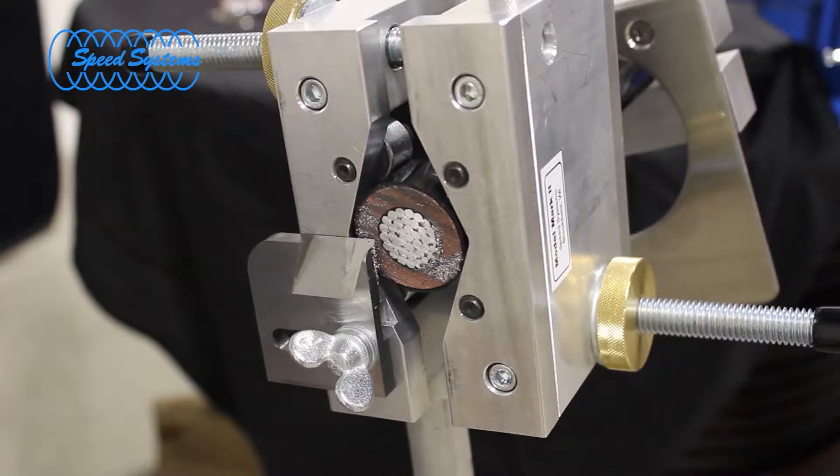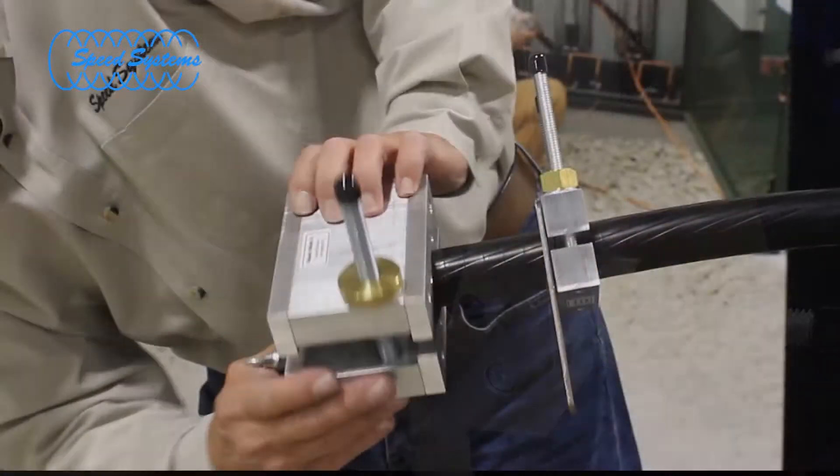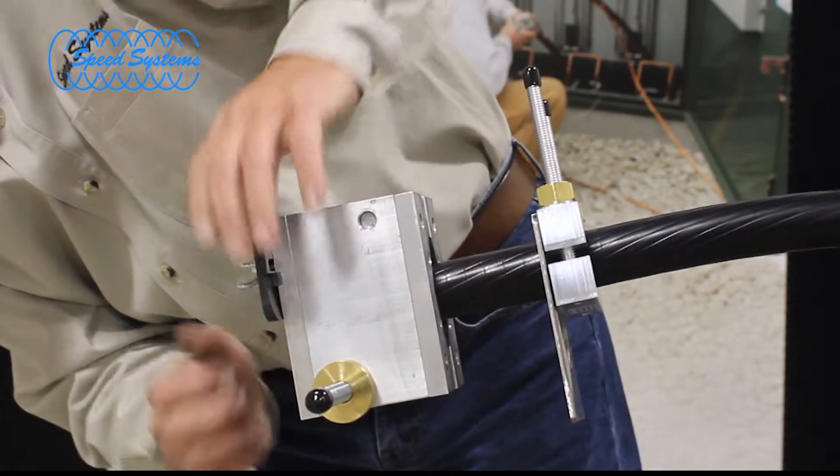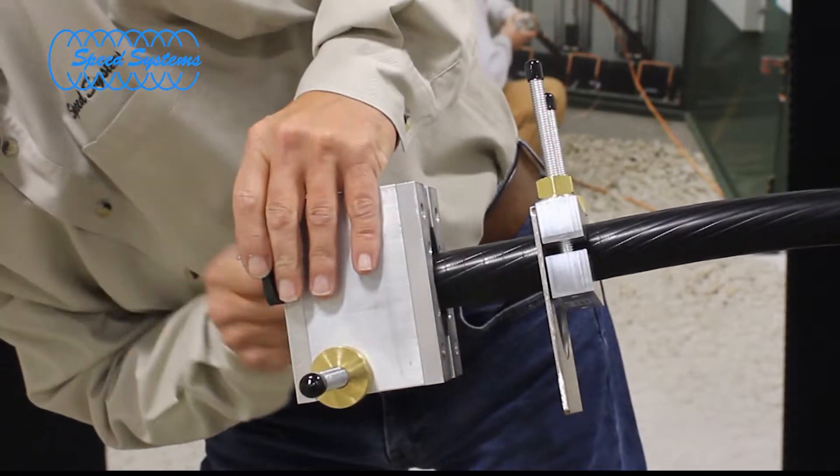Set the blade depth to approximately 1/16th of an inch shy of the conductor and rotate the tool backwards around the cable one time to visually verify that the blade will not contact the conductor at any point.